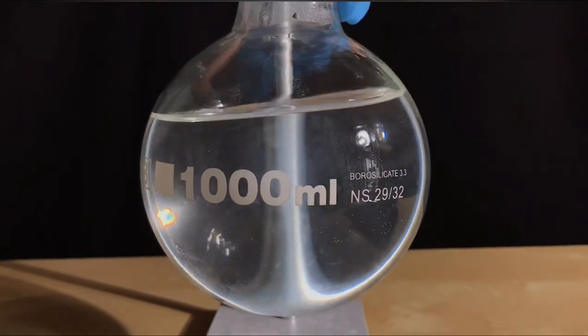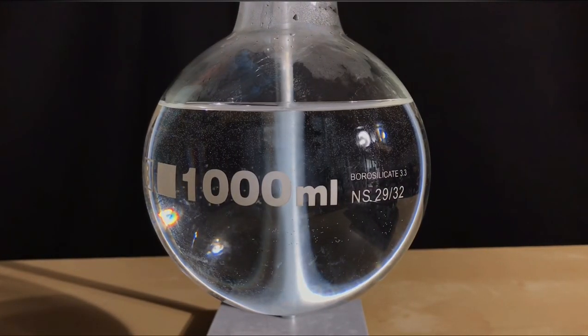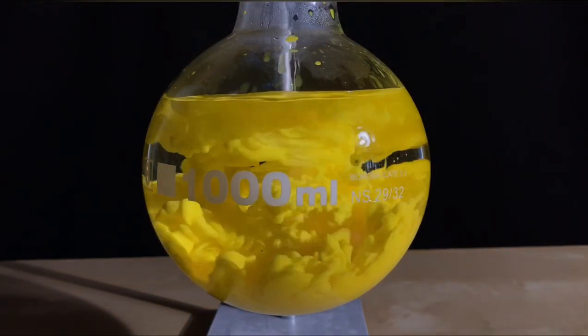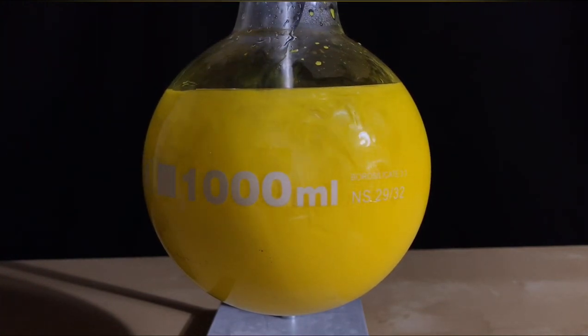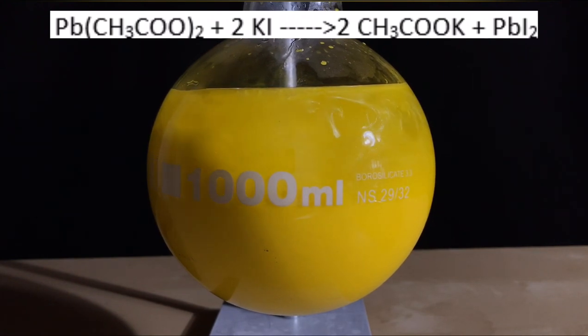Time for some action. Let's combine both of the solutions. Upon contact, a yellow precipitate immediately falls out. This is lead(II) iodide. On the top, you can see the reaction that was taking place.